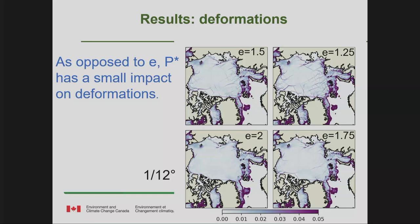Now let's start with deformation. What we're seeing in our results is that P* has a small impact on deformations, land fast ice, and volume. The ellipse aspect ratio E has a much larger impact. Looking at the absolute divergence — this is a monthly mean for February 2005 — you can see that as we increase shear strength, i.e., decrease E, there is a lot more activity in the sea ice cover: a lot more sea ice deformations. This is consistent with results of Bouchard and Tremblay.